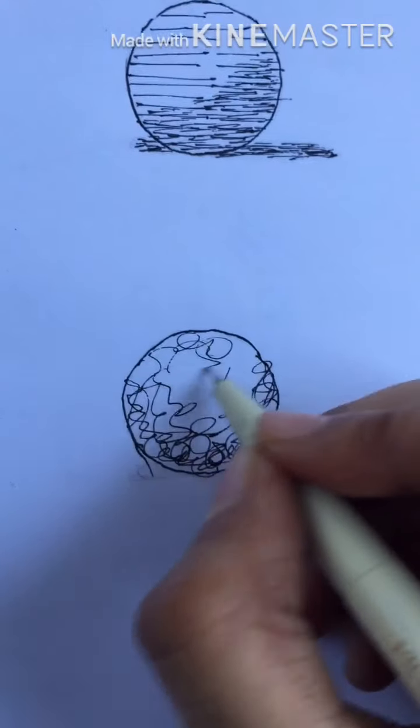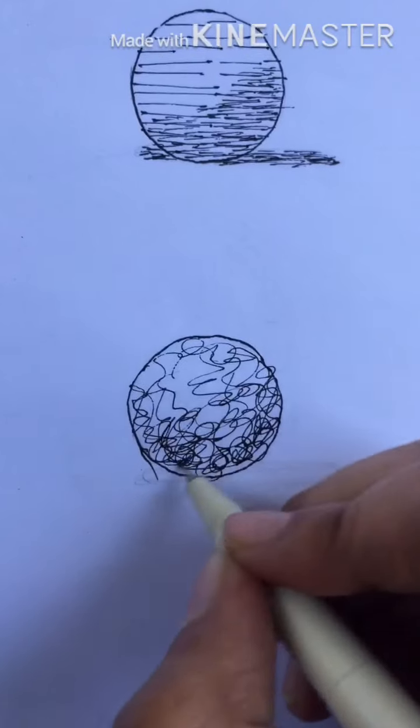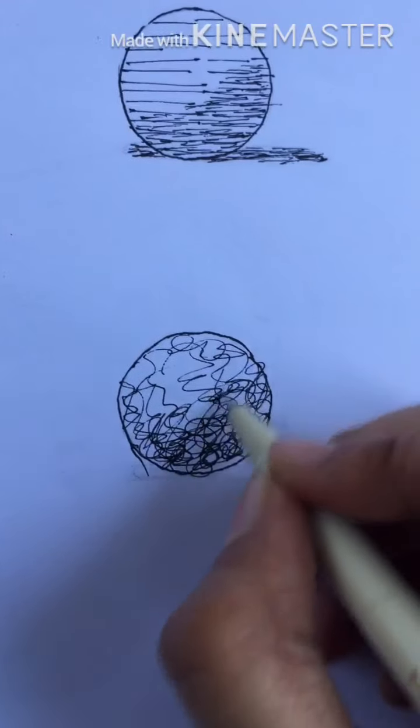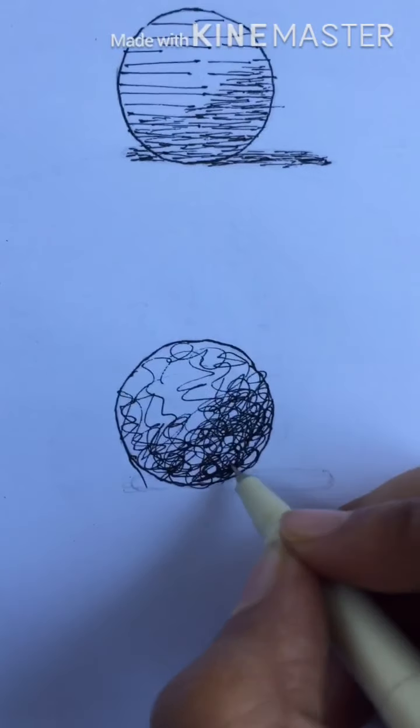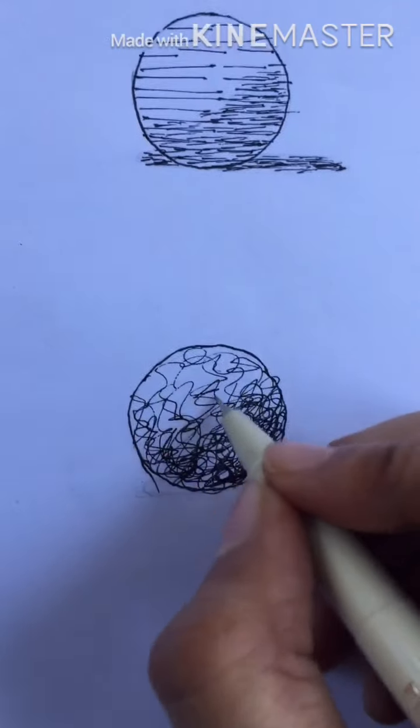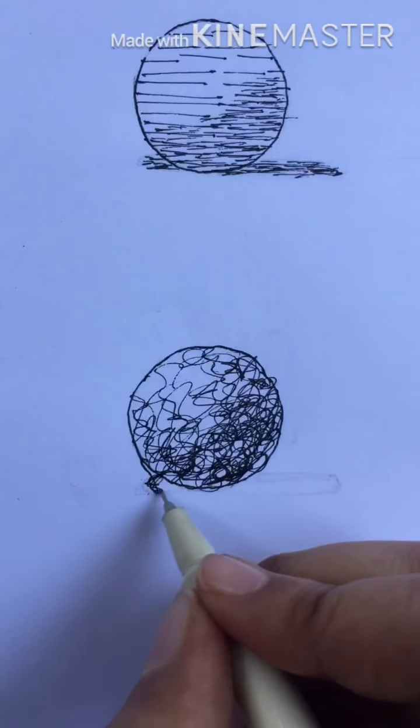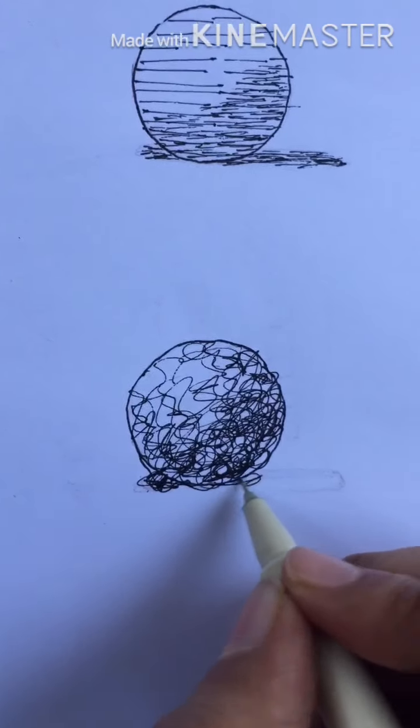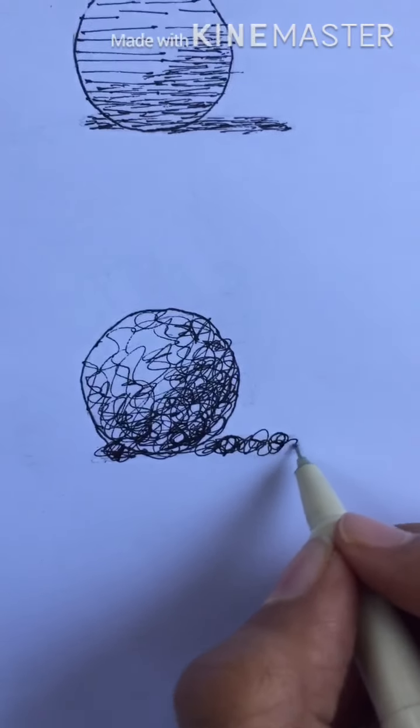The greater the frequency these lines cross over each other, the darker the perceived value will be. This is a great technique to create the illusion of texture. Out of the four techniques, using random lines is definitely the quickest way to build value in a drawing.